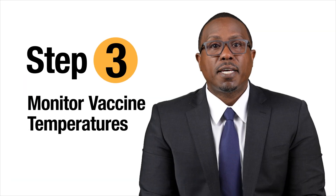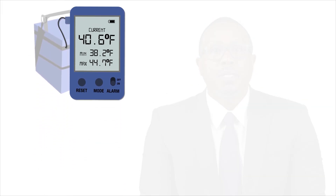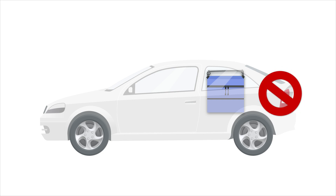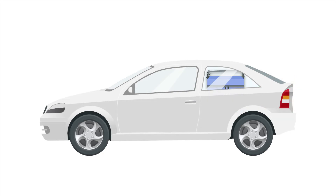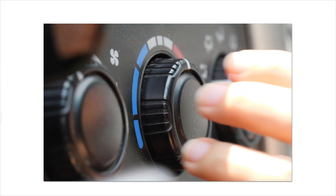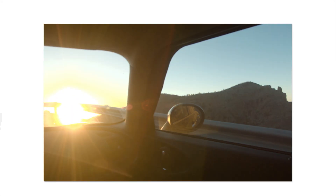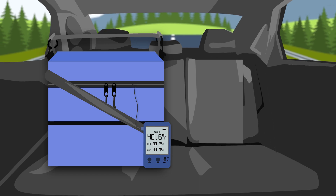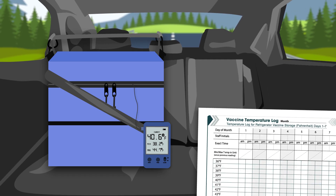Step three: monitor vaccine temperatures. Use a DDL to monitor any changes in temperatures. If using a company or personal vehicle to transport the vaccine, place the vaccine container inside the passenger compartment and not in the trunk or bed of a truck, which may be too hot or too cold. Move transport containers directly to a vehicle that is already at a comfortable temperature, and avoid leaving containers in areas where they are exposed to direct sunlight. Always document temperature readings and how much time vaccines spend in transport on a temperature log.